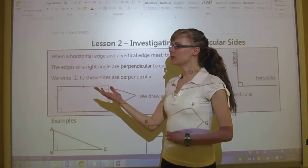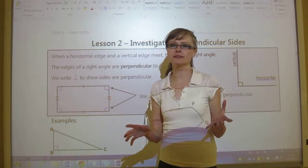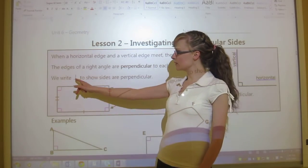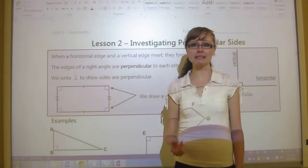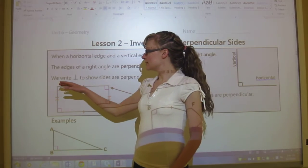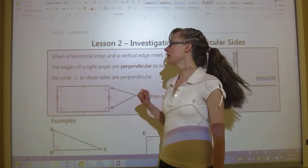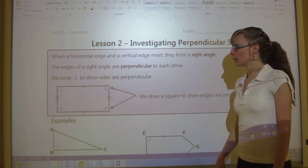And what we do is, when we're saying a side is perpendicular to another side, we use this little doohickey right here. It's sort of like an upside down capital letter T. And so we write that, and it's like this, if I did it with my arms, to show sides are perpendicular.